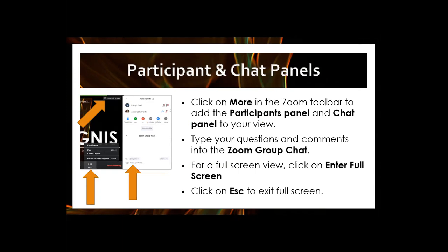The participants panel is located near the top right corner of your screen and the chat panel is near the bottom right corner. If you're not seeing these panels, click on 'More' in the Zoom toolbar and then on Participants or Chat. Please type your comments and questions into the Zoom group chat as we go, and be sure to select 'Everyone' from the dropdown menu when sending a message so we can all see it.